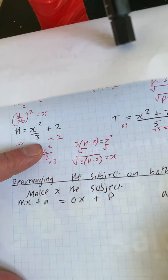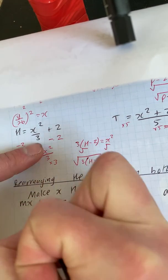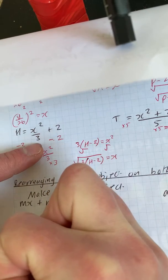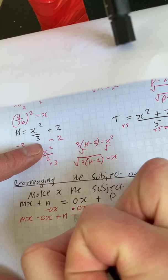So the first thing we need to do is get all the x's on the same side. So if we take away this ox, it doesn't matter which one you do, so we've taken away ox, we've got mx minus ox add n is equal to p.